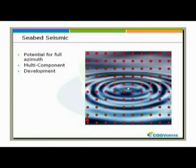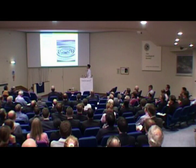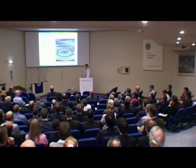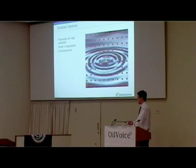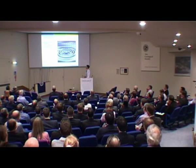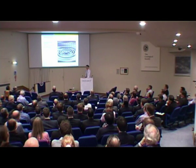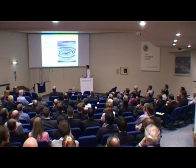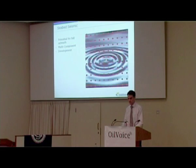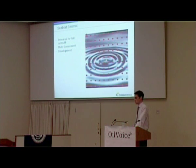For seabed, we've been doing wide azimuth routinely for years. We reverse the experiment — one receiver in the centre — and we're free to shoot whatever kind of shot grid we want on the surface, acquiring wide azimuth or full azimuth data. We also benefit from recording multi-component data. However, with current seabed systems, limited node numbers and cable availability make it more suited to smaller targets and developmental prospects.